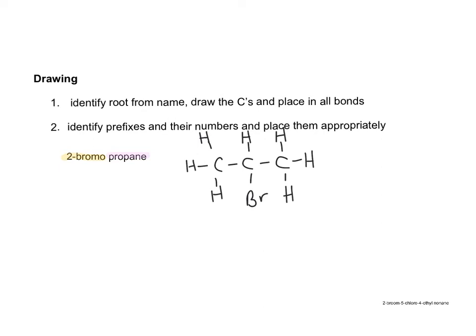Of course, there would be an isomer for this, and that would be called 1-bromopropane. The bromine group could be on an end carbon, so carbon number 1. Next example. 2-bromo, 5-chloro, 4-ethyl, nonane. So that's a lot of carbons.